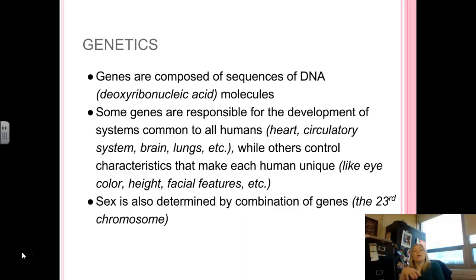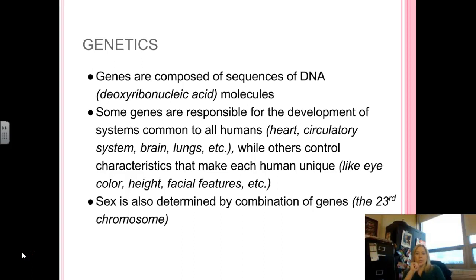Those genes are composed of deoxyribonucleic acid — your DNA. Some genes are responsible for the development of much of the physiological aspects of you: your heart, circulatory system, brain, lungs, things like that. Others control characteristics that make you more unique, like eye color, height, and facial features. Sex is also determined by your combination of genes based on the 23rd chromosome.